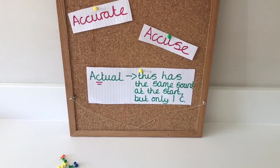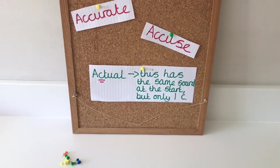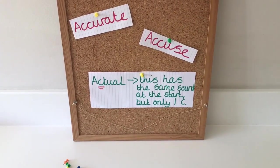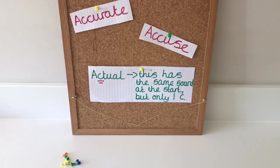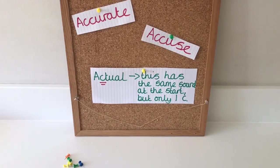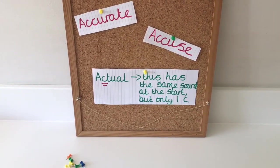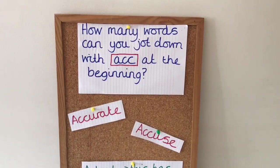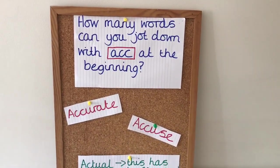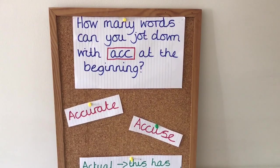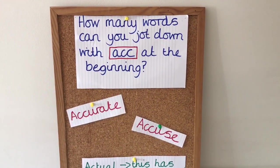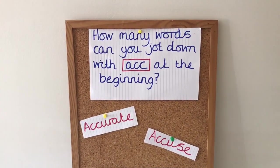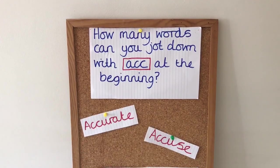For example, the word 'actual' has the same sound at the start, but it only has one 'c' in the actual spelling of the word. So your first activity is: how many words can you jot down with 'acc-' at the beginning? If you'd like to pause the video now and see how many you can get in a minute.